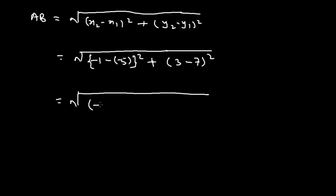If we further solve it, then it is equals to (-1 + 5) whole squared plus (-4) squared.